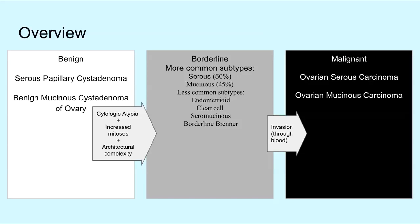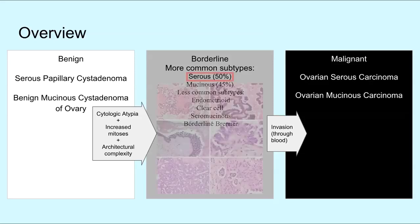There are six histologic subtypes of BOTs, which are distinguished based on the epithelial cell type: Serous, Mucinous, Endometrioid, Clear Cell, Seromucinous, and Borderline Brenner. Here we are discussing the most common type, serous.